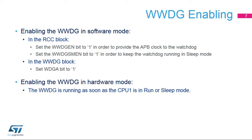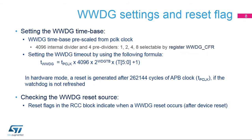In hardware mode, there is no need to enable the watchdog. The WWDG is counting down when CPU1 is in run or sleep, and the bits WWDGEN and WWDGSMEN are forced to 1 by the hardware. The down-counter uses the APB1 clock divided by 4096 and again divided by a division ratio selected by the application. This division can be 1, 2, 4, or 8 as defined in the WWDG CFR register. The formula shown in this slide lets you determine the watchdog timeout value.